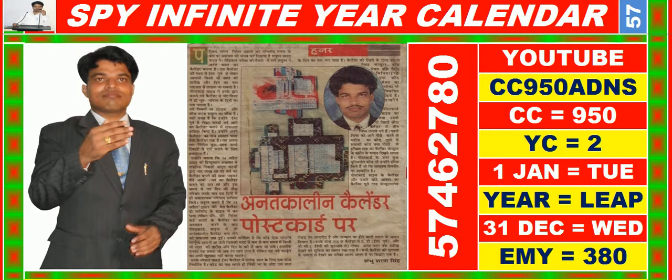In this video you are watching SPY Infinite year calendar for the year having calendar code equal to 950. You may also search it on YouTube by C.C. 950 A.D.N.S.